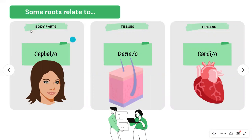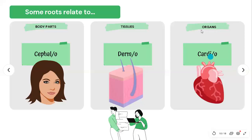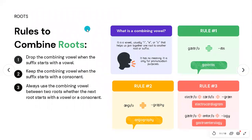Just like prefixes, we can classify roots into categories to make them easier to learn. We have roots related to body parts — for example, 'cephalo' related to the head. Roots related to tissues — like 'dermo' related to skin. And roots related to organs — like 'cardio' related to the heart.